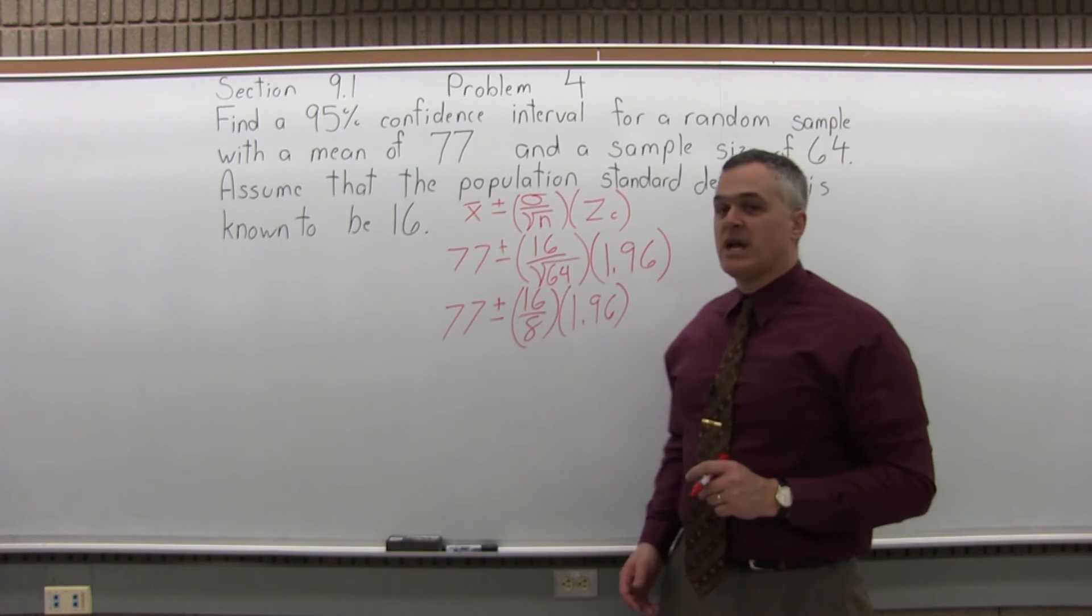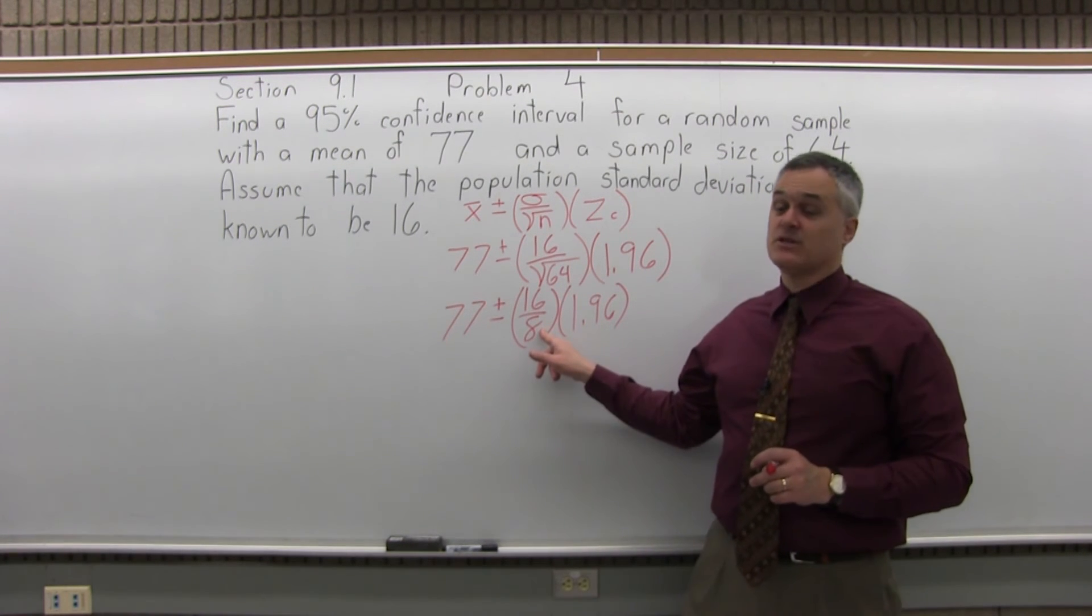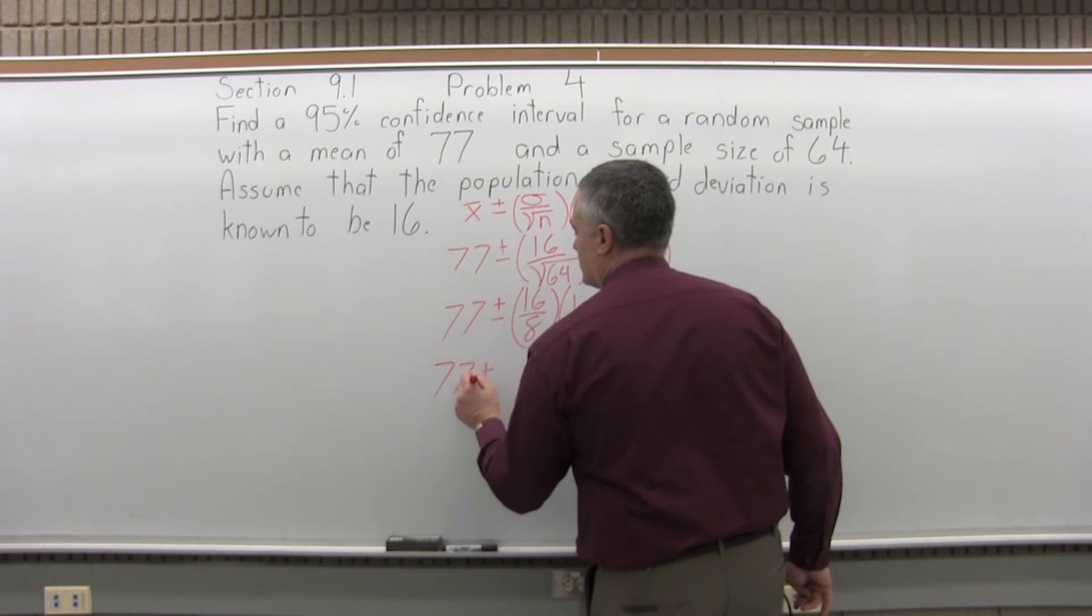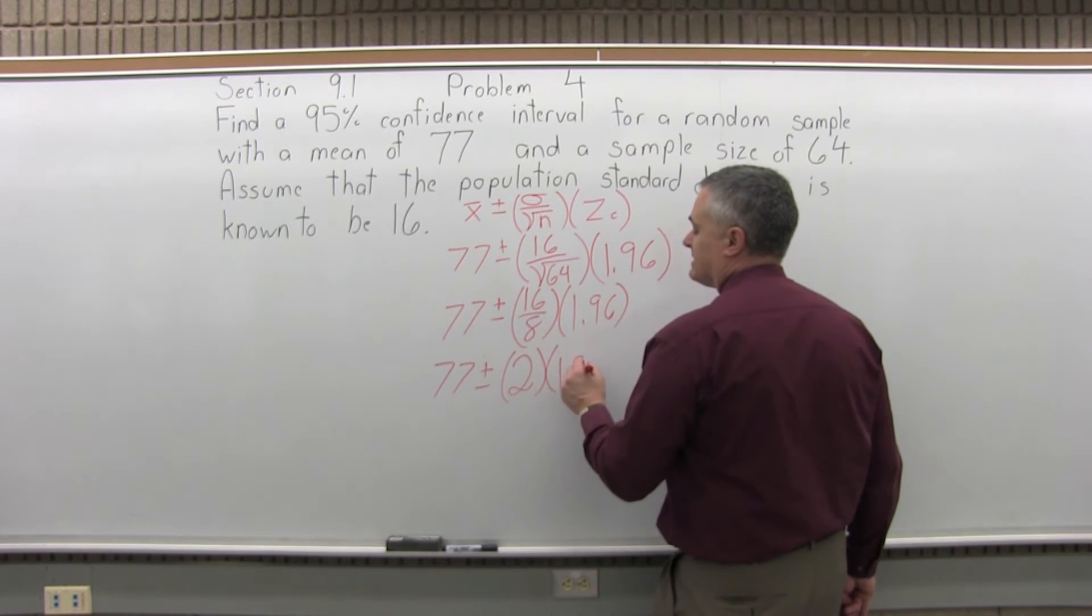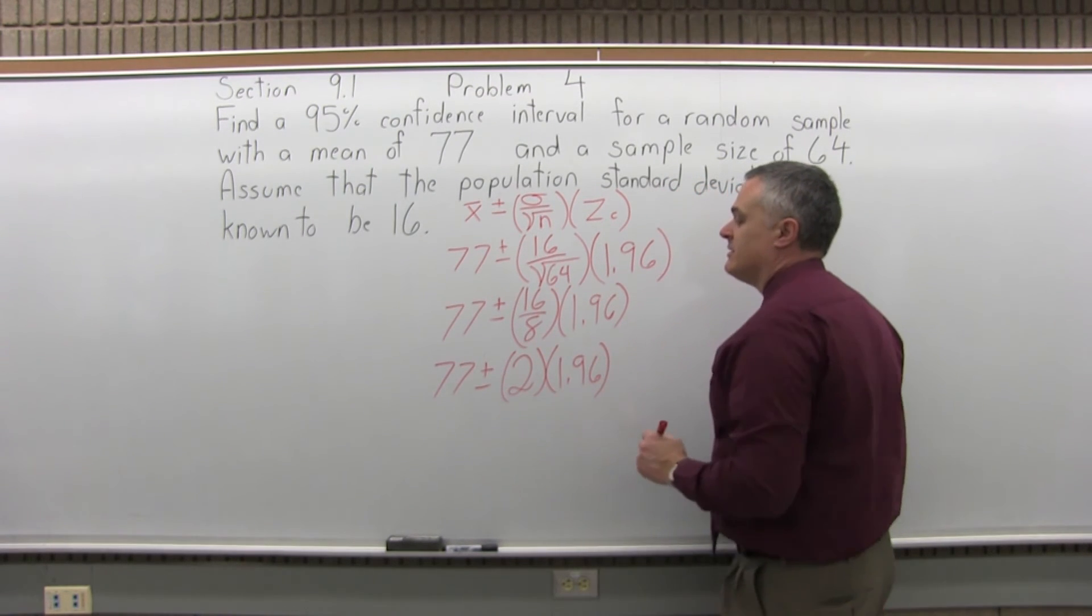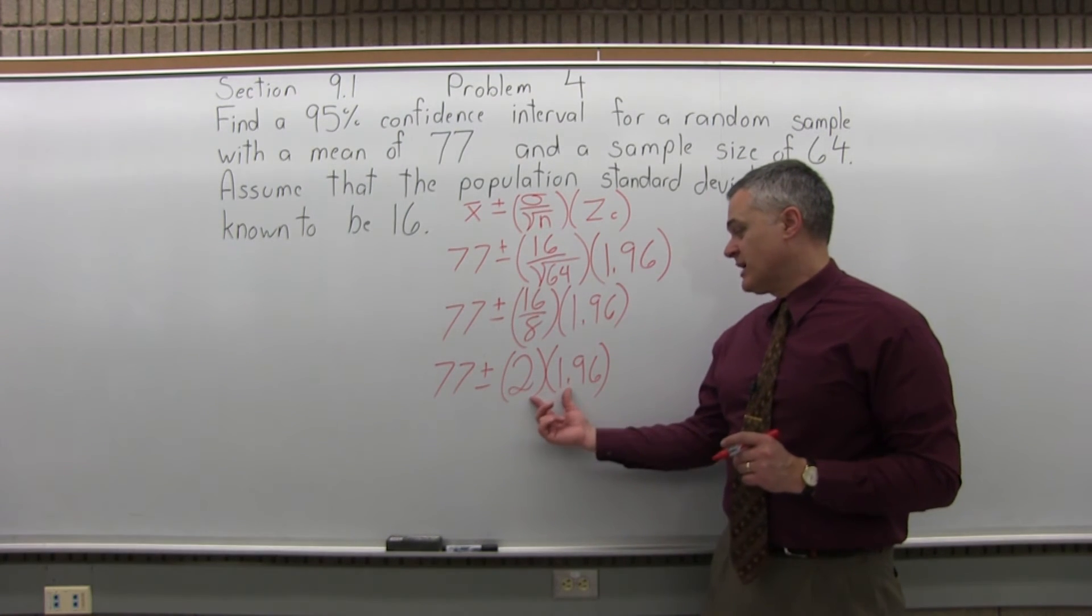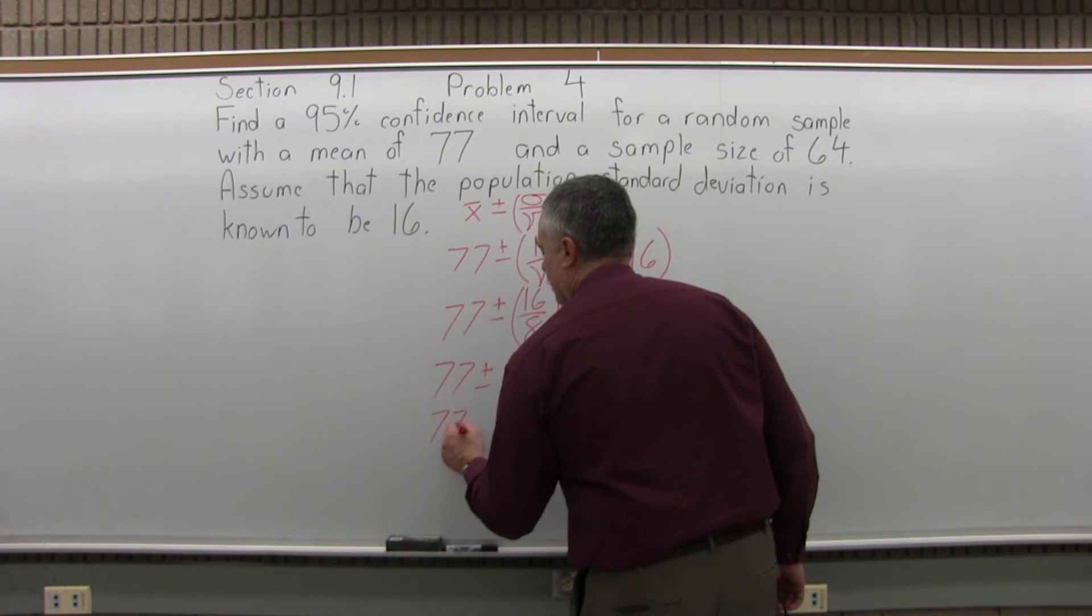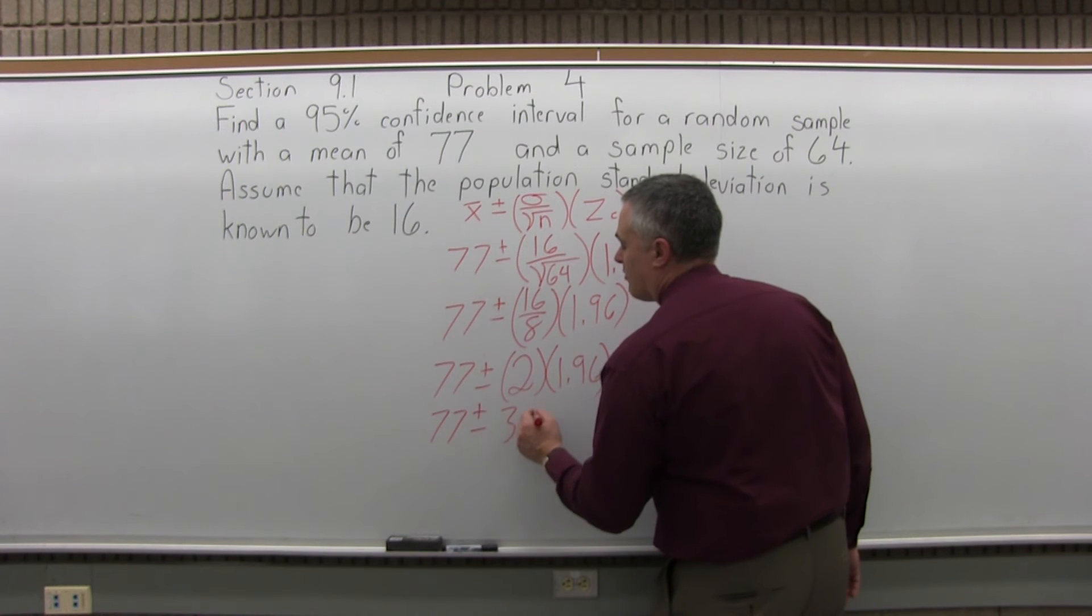So now I can reduce that 16 over 8. That reduces very nicely to 2. So I'll have 77 plus or minus 2 times 1.96. And now I can actually multiply 2 times 1.96. So I'll have 77 plus or minus 2 times 1.96 is 3.92.